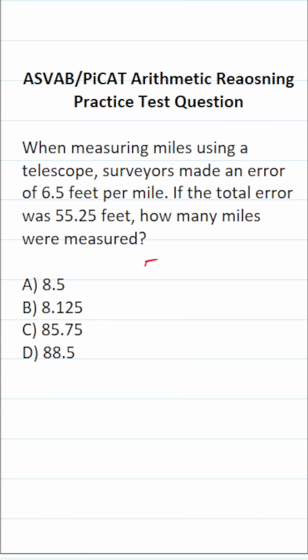In this case, we're simply going to do 55.25 divided by 6.5 in order to determine how many miles they measured using the telescope. We can read this as long division: 55.25 divided by 6.5.